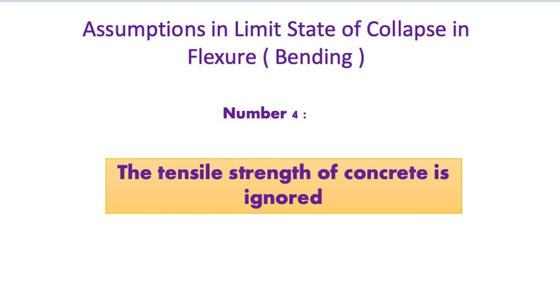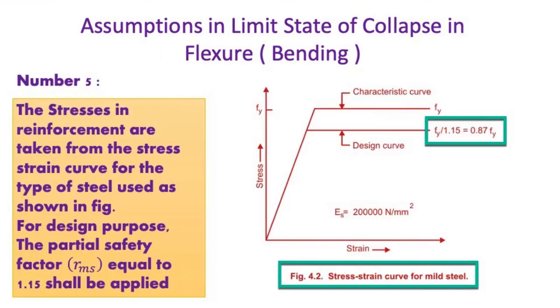Number 4 assumption: The tensile strength of concrete is ignored. Number 5 assumption: The stresses in reinforcement are taken from the stress-strain curve for the type of steel used as shown in figure. For design purposes, the partial safety factor gamma_m_s equal to 1.15 shall be applied.